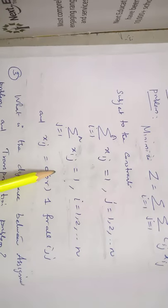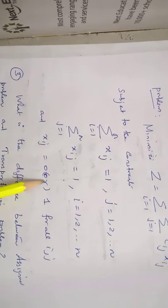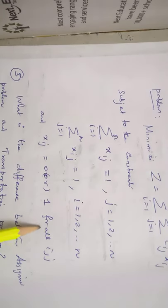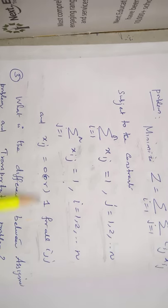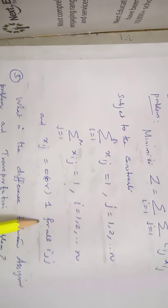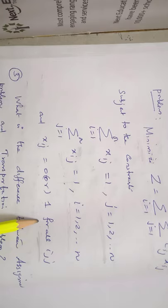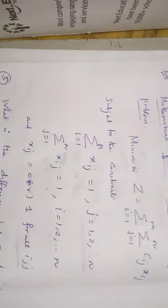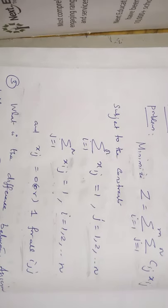Finally, the non-negativity restriction: X_ij is 0 or 1 for all i, j. So the X_ij value is 0 or 1. This is the mathematical formulation of an assignment problem.